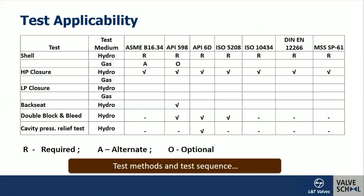This particular slide talks about what tests are applicable for gate, globe, check valve, ball valve, and butterfly valve. Having said that — hydrostatic shell test, closure test, high pressure closure test, low pressure closure test, backseat test — these are the various tests applicable for different types of valve products. This is a comparison of which standards say these tests are required, which tests can be done as an alternate, and which tests are optional.